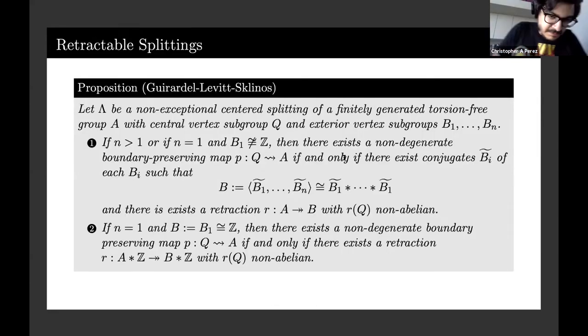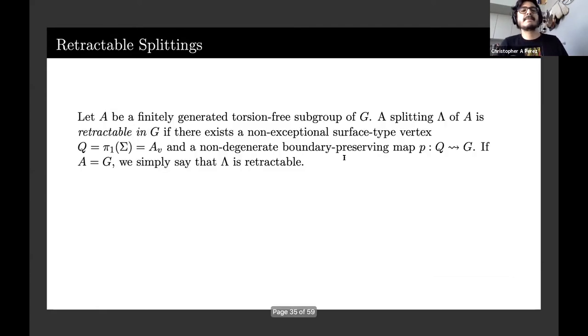The reason why these boundary preserving maps are interesting is because they allow us to collapse down this space that we've constructed to represent our group onto the lower parts of it. If lambda is a non-exceptional centered splitting of a finitely generated torsion-free group A with central vertex subgroup Q and lower or exterior vertex subgroup B_1, there exists a non-degenerate boundary preserving map from Q to A if and only if we're able to find these nice retractions as stated in this proposition due to Guirardel, Levitt, and Sklinos.